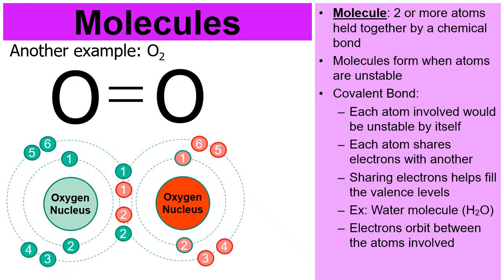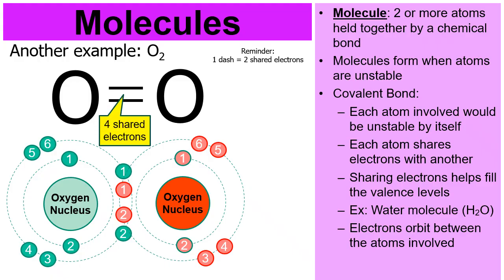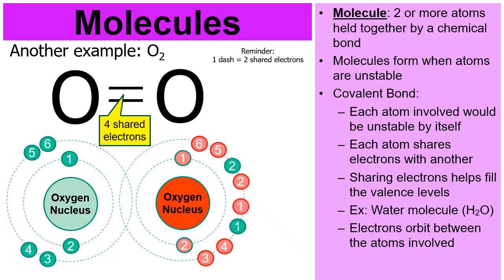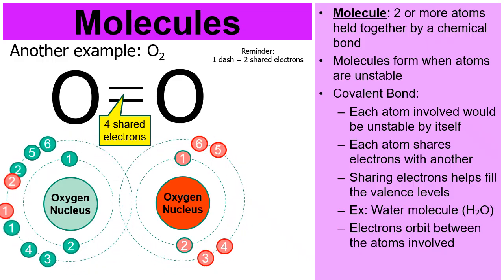Here's how we could draw it: an O with two dashes and then another O. Why are there two dashes? Well, because one dash represents two shared electrons. Therefore, those two dashes must represent four shared electrons — and that's what you see happening in the animation. Those four electrons are being shared back and forth. We call this a double bond when you see two dashes like this.